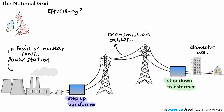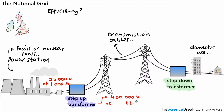So how is efficiency achieved by the National Grid? We need to look at the amount of potential difference supplied by the power station and also the current. We have about 25,000 volts supplied at 1,000 amps — these are typical values. That passes through the step-up transformer, which steps up the voltage to about 400,000 volts. Quite importantly, the current is reduced to about 62.5 amps. So we have a big increase in voltage — a high voltage — and a low current, and that's really important for transferring energy around the country.